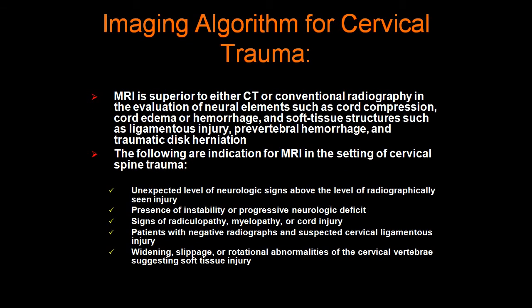MRI is superior to either CT or conventional radiographs in the evaluation of neural elements such as cord compression, cord edema or hemorrhage, and soft tissue structures such as ligamentous injury, prevertebral hemorrhage, and traumatic disc herniation. The following are indications for MRI in the setting of cervical spine trauma.